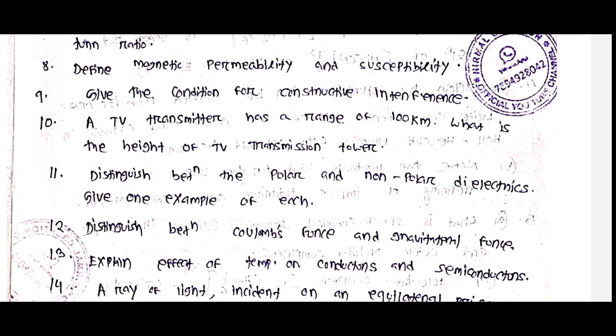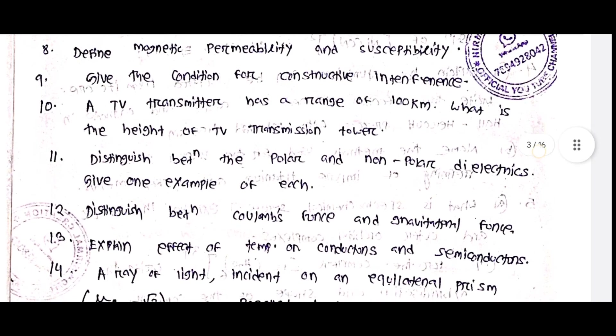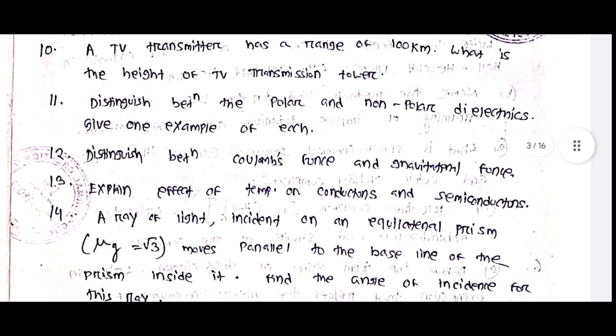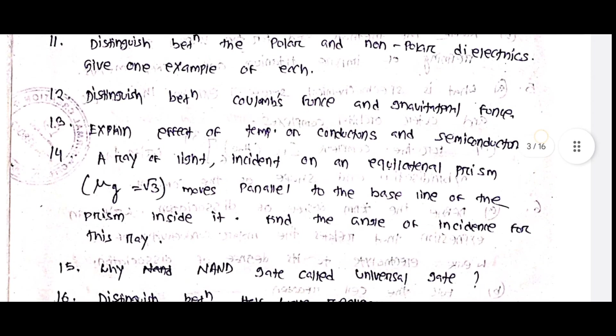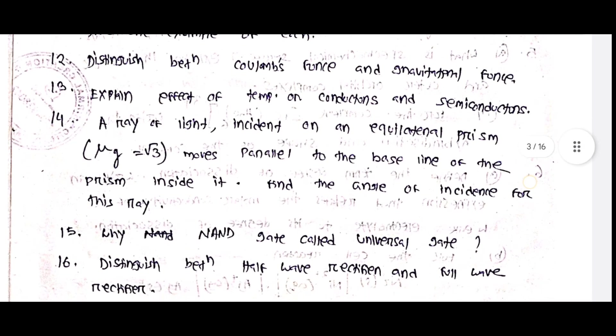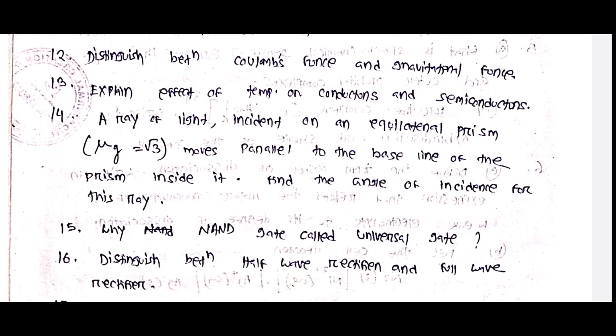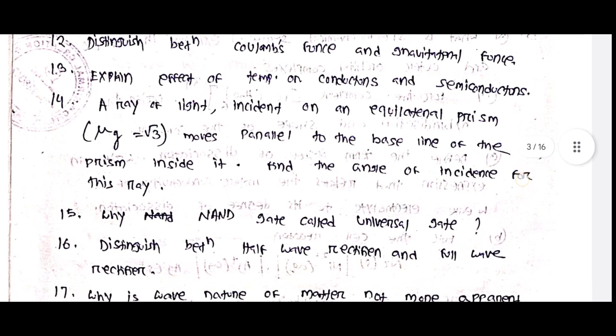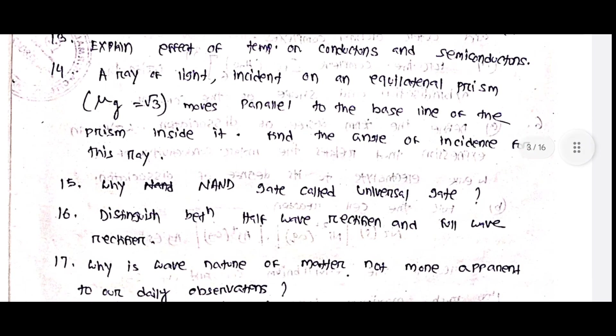Step-up or step-down transformer: turn ratio is important. Define magnetic permeability and susceptibility. Give the condition for constructive interference. A TV transmitter has a range of 100 km — what is the height of the TV transmission tower?